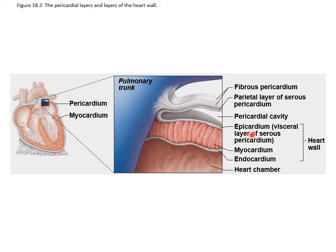Here are the layers of the heart wall: epicardium, myocardium — which is mostly heart muscle cells — and then the endocardium. Under the endocardium is your heart chamber.